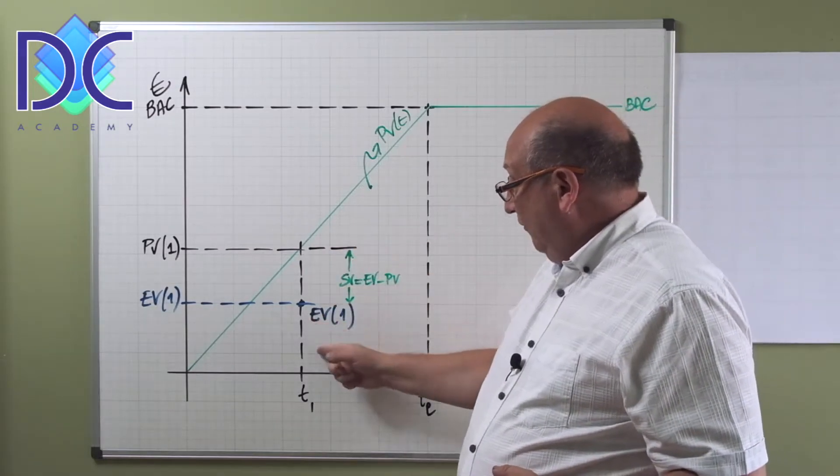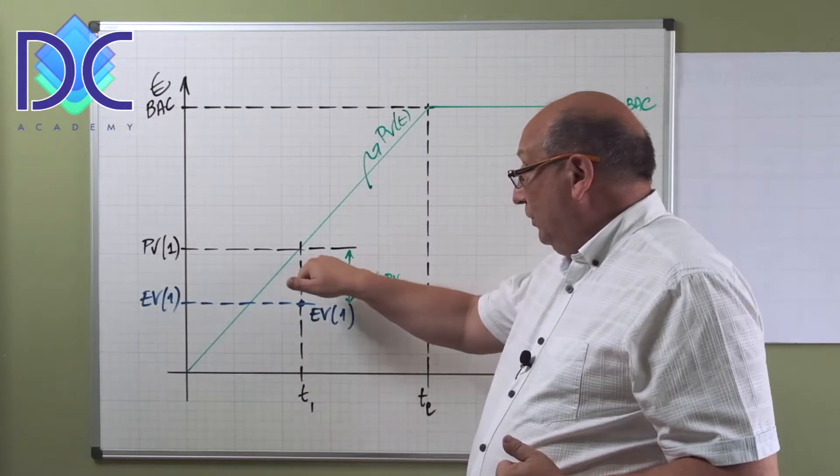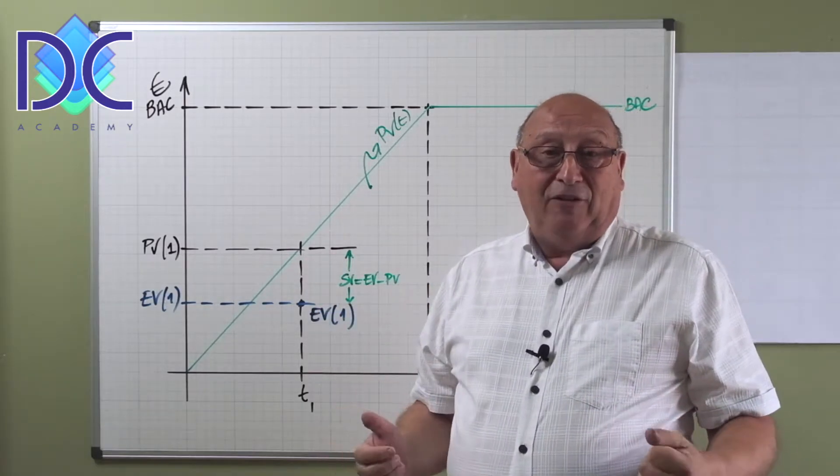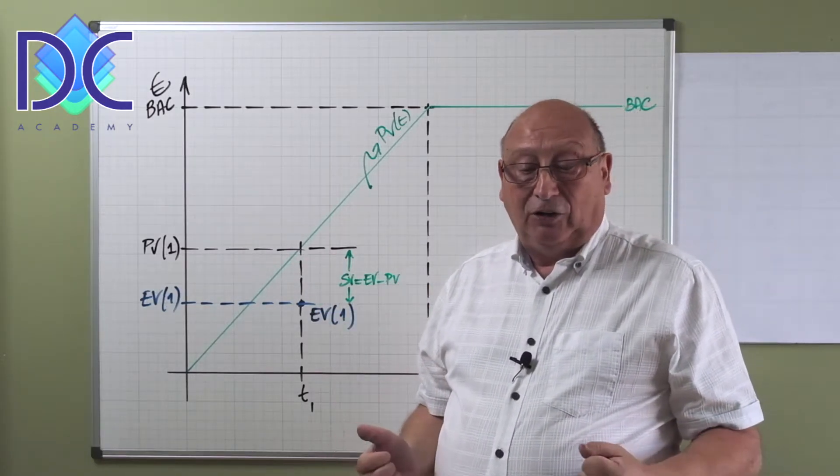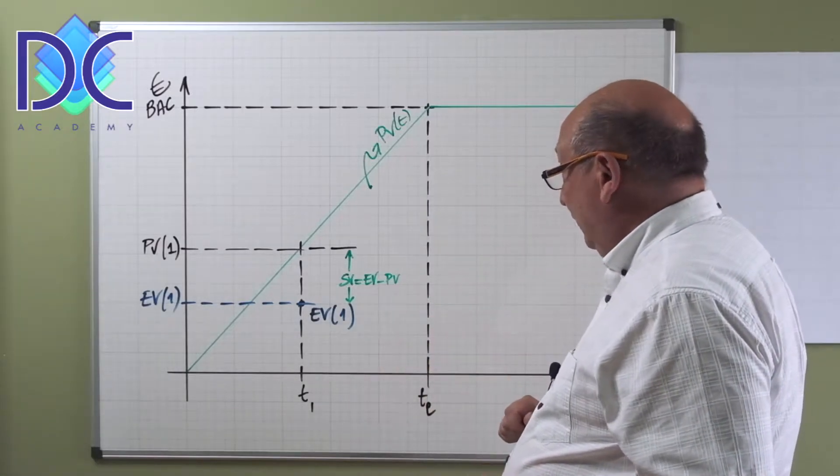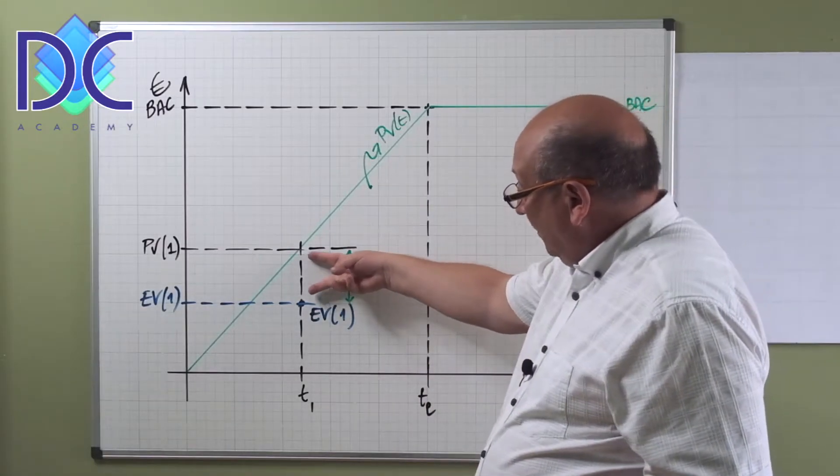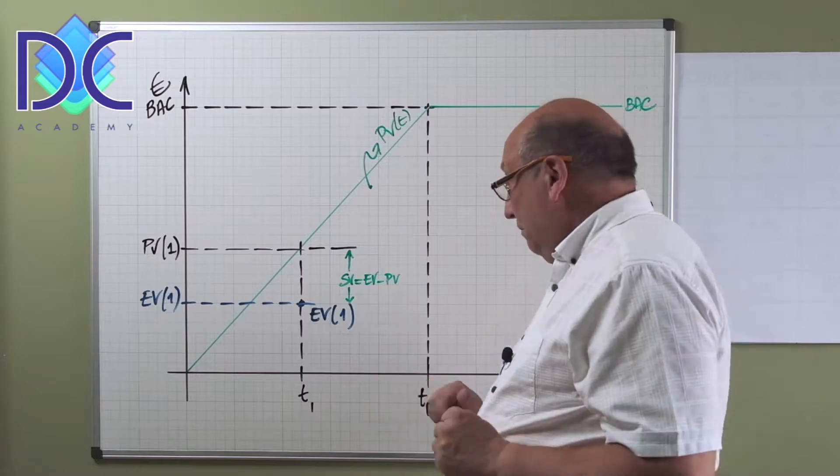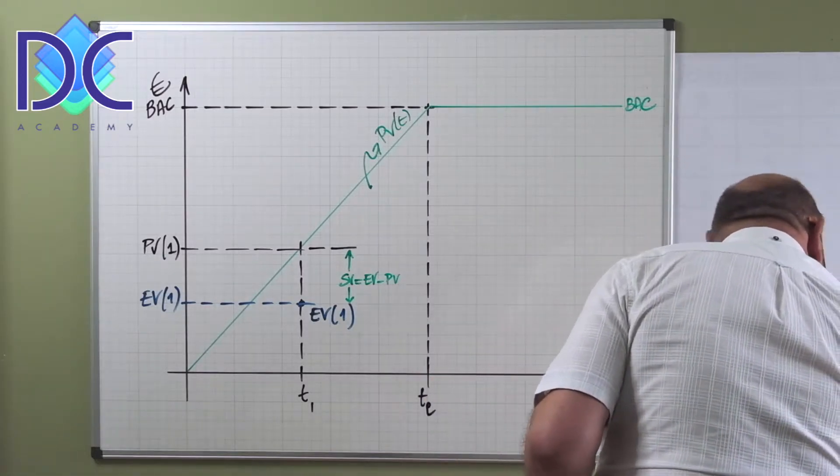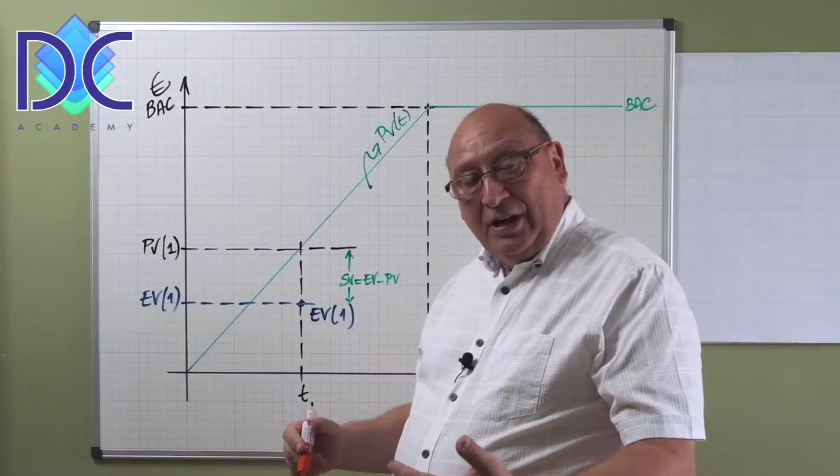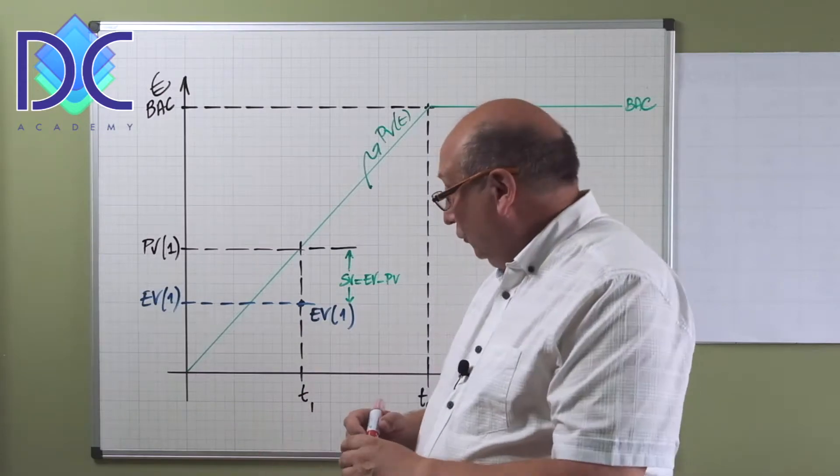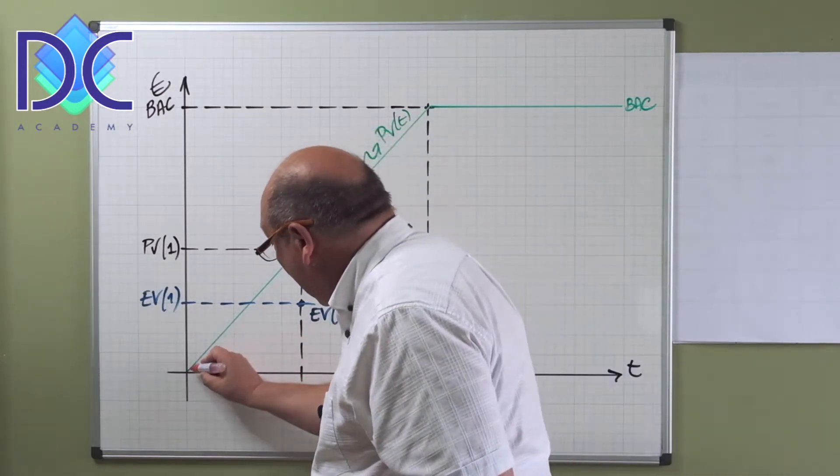So when we finish the project, all the work is done, all the value has been earned. Now here we see that at t1 we have earned value which is lower than the plan value, which means that the schedule variance is negative, which is not good. So we measure the schedule variance here.